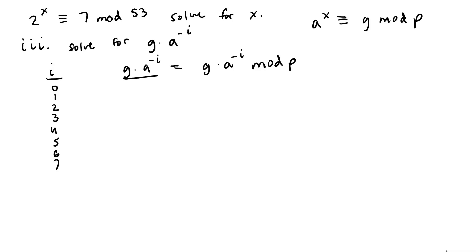So doing our first step we have our g value which is 7, our a value which is 2, and to the negative i which is just 0, and we mod p it which will be mod 53. Now before you say this is equal to 1 you have to remember that we're doing 7 times 2 to the 0 mod 53 and 2 to the 0 mod 53 that is 1.